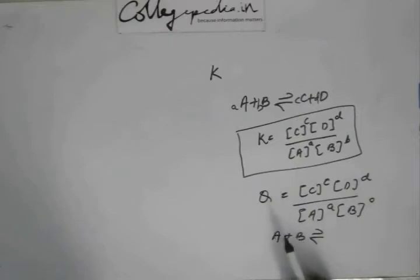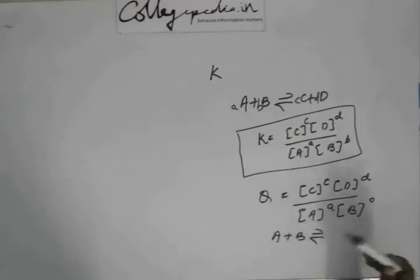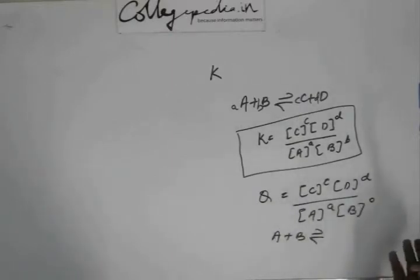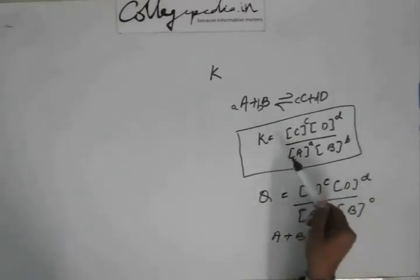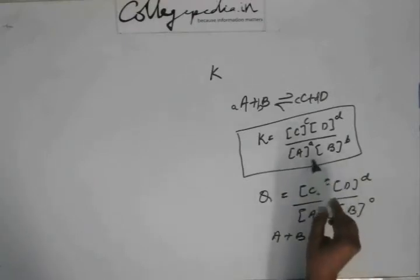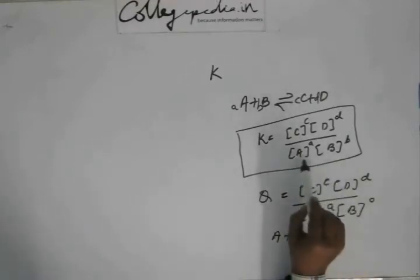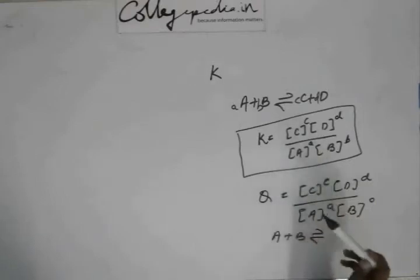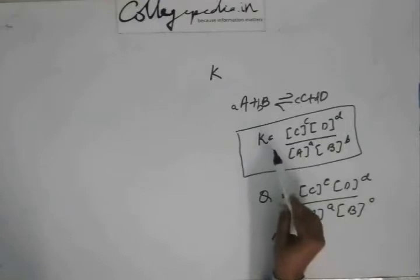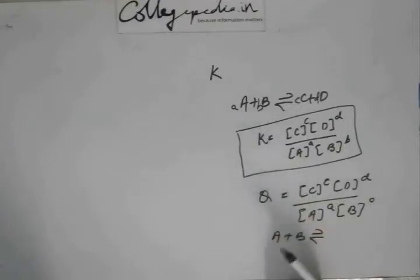Q uses the same expression as K, but it is evaluated at any general point. K is the expression evaluated specifically at the equilibrium state, so its concentration terms are equilibrium concentrations, while Q uses any general concentration terms. That's the difference — K is a special case of Q.